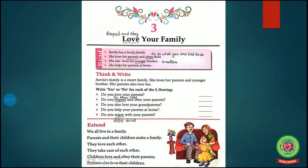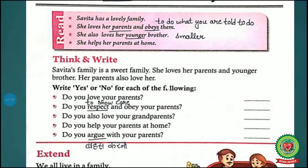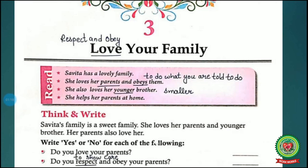Open your moral science book to page number 15, hold the pencil and keep it on the name of the chapter, and start reading with me. The name of the chapter is 'Love Your Family.' Its meaning is respect and obey your family. You can write here: respect — R-E-S-P-E-C-T — and obey — O-B-E-Y. So 'love your family' means respect and obey your family.